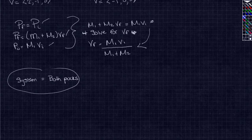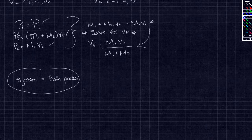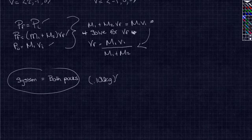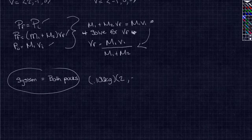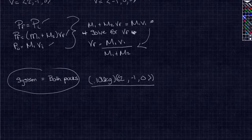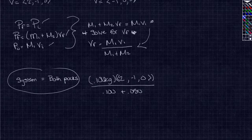So we are going to plug in our information, which would be 0.100 kg times the vector 2, negative 1, 0. That's going to be over the two masses, which is 0.100 plus 0.050 kg.